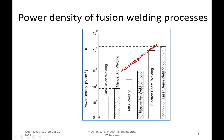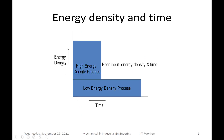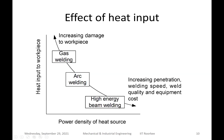In summary, the processes are in order of increasing power density from gas welding to laser and electron beam welding. Higher power density means less time needed to achieve fusion, so less heat dissipates into the base metal and net heat input is lower. Heat input equals power density multiplied by time. Low power density means longer time and therefore greater heat input, leading to poorer weld performance.